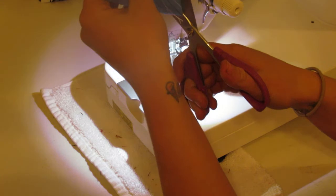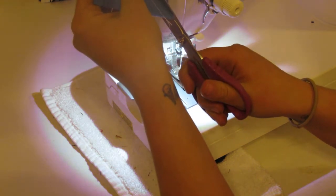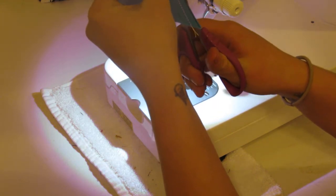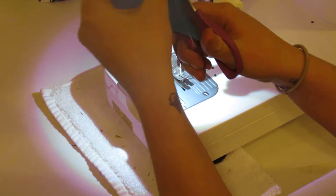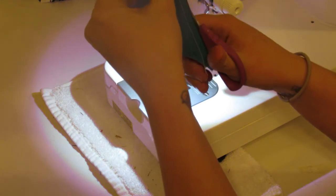And now we are going to cut it apart at the lines. And this will give us our two half square triangles.